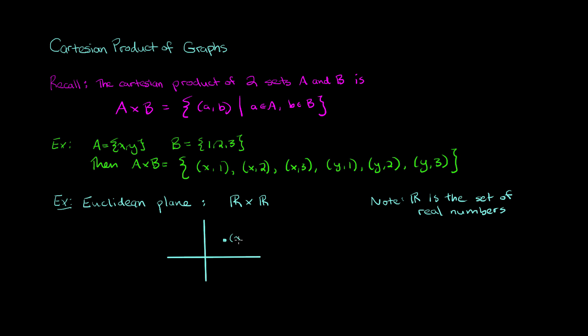And we normally think of the Euclidean plane as having an x-axis and a y-axis. And any point (x, y) can be any point on that plane where x is a real number and y is a real number. So also a nice thing to remember here is that the set of real numbers is an infinite set, which means that when you take the Cartesian product of sets, those sets could be finite or infinite.